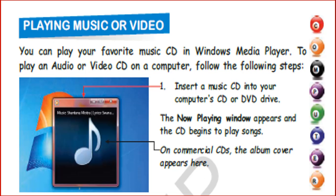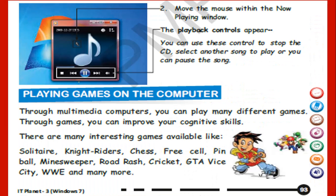Playing Music or Video: You can play your favorite music CD in Windows Media Player. To play an audio or video CD on a computer, follow these steps: Insert a music CD into your computer's CD or DVD drive. The now playing window appears and the CD begins to play songs. On commercial CDs, the album cover appears. Move the mouse within the now playing window — the playback controls appear. You can use these controls to stop the CD, select another song, or pause the song.